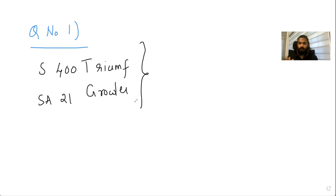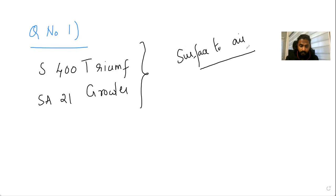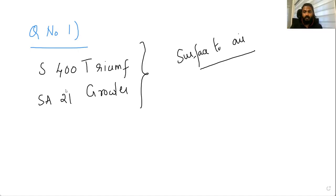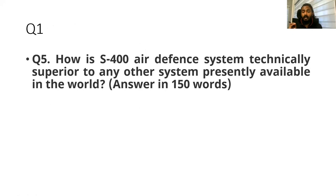The S-400 is a mobile surface-to-air missile defense system belonging to Russia, capable of engaging any airborne threat — aircraft, UAVs, cruise missiles, ballistic missiles, etc. You can add one line showing its strength: The Economist has called S-400 one of the most potent air defense systems available in the market. The question is asking how S-400 is technically superior to other systems, so a comparison must be made.